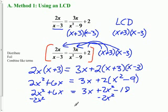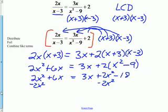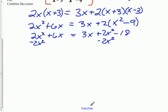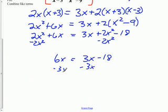All right, let's combine our terms. You can see if I subtract 2x squared from both sides. Convenient. Both of those are going to disappear. And we're going to be left with 6x equals 3x minus 18. Let's subtract 3x quickly.